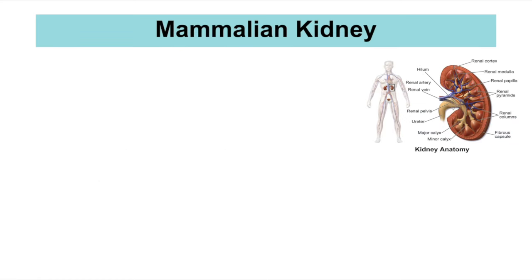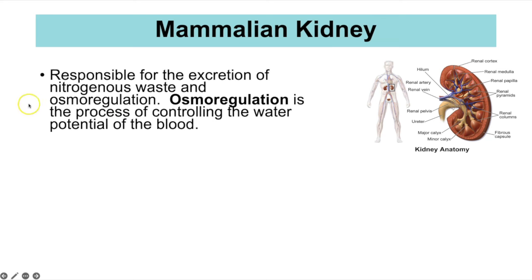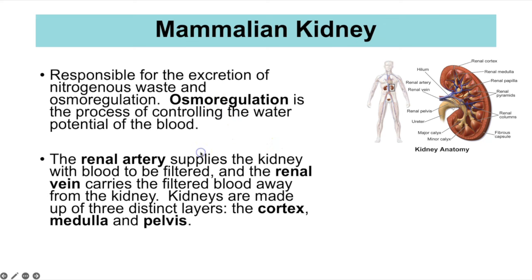We're going to look at controlling the water potential of the blood first, and this involves the kidneys. This is where the blood is filtered and excess water is removed, so it's also responsible for removing nitrogenous waste, not just excess water. Osmoregulation is the term for controlling the water potential of the blood.